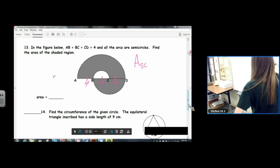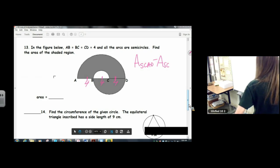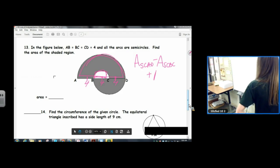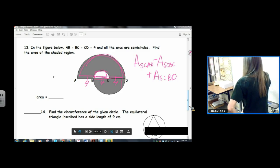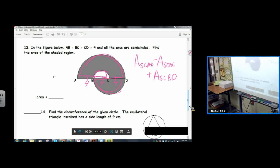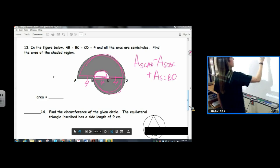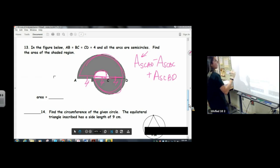There might be a better way to do this, but I'm thinking we find the area of semicircle AD minus the area of semicircle BC. So we do this one, then we take away this one, and then we add in the area of semicircle BD. I don't know, there might be a better way, but I'm gonna do it this way.